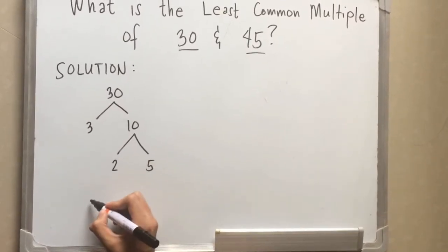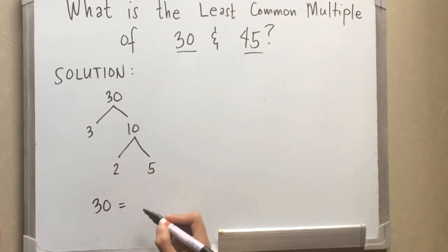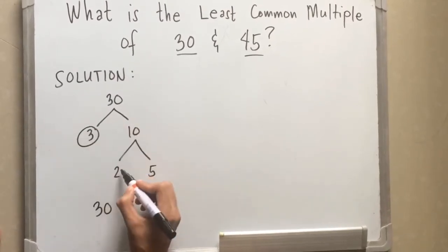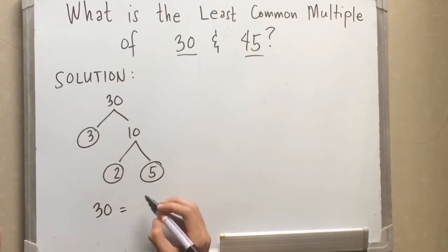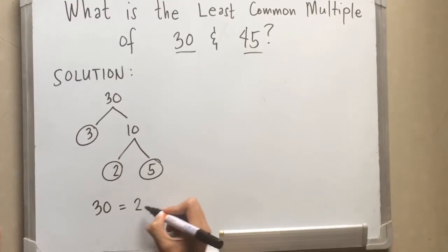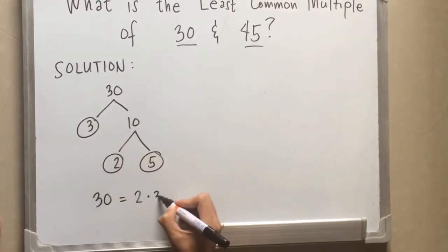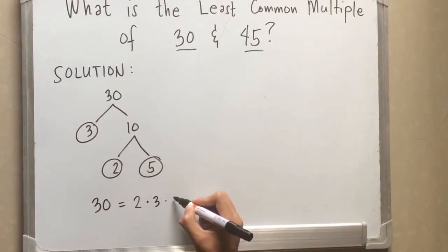So by inspection we have these factors for number 30: 3, 2 and 5. So 2 times 3 times 5 is equal to 30.